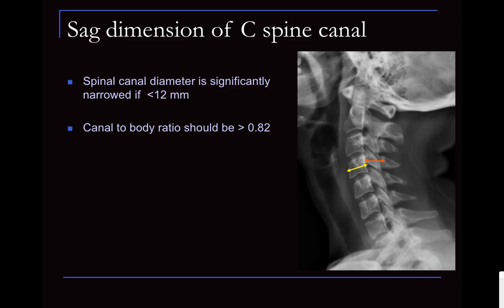We need to look at the dimension of the cervical spinal canal — is there any significant narrowing? We measure the AP dimension of the vertebral body and the AP dimension of the canal, which is from the posterior margin of the vertebral body to the spinolaminar line. They should be roughly equal. If the canal is smaller, that would suggest canal narrowing. Measurement-wise, the cervical spinal canal diameter should be more than 12 millimeters.